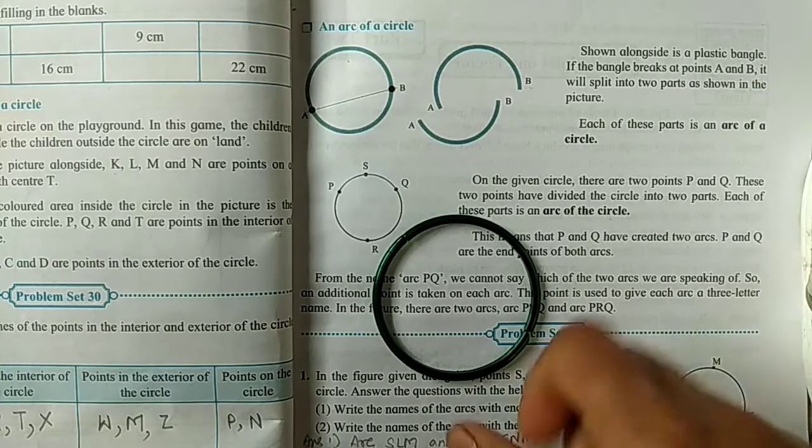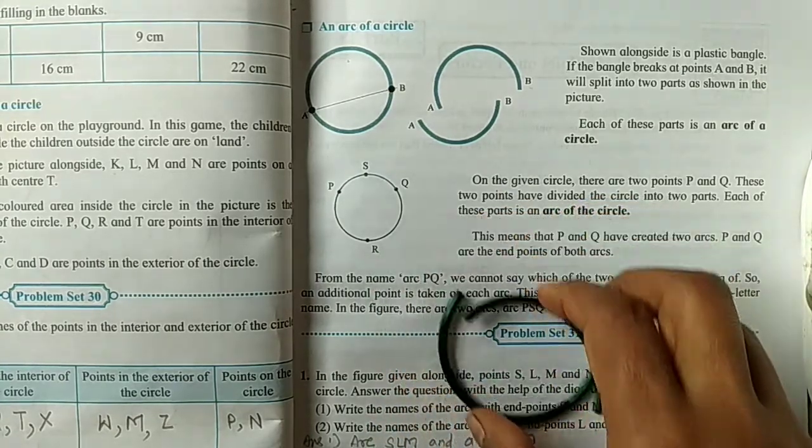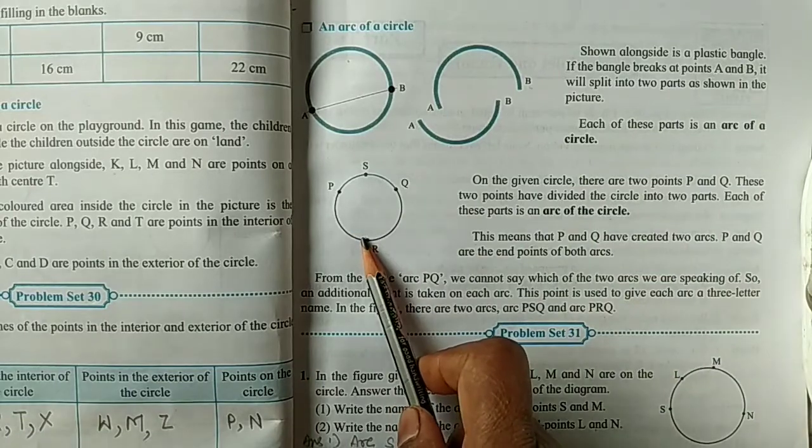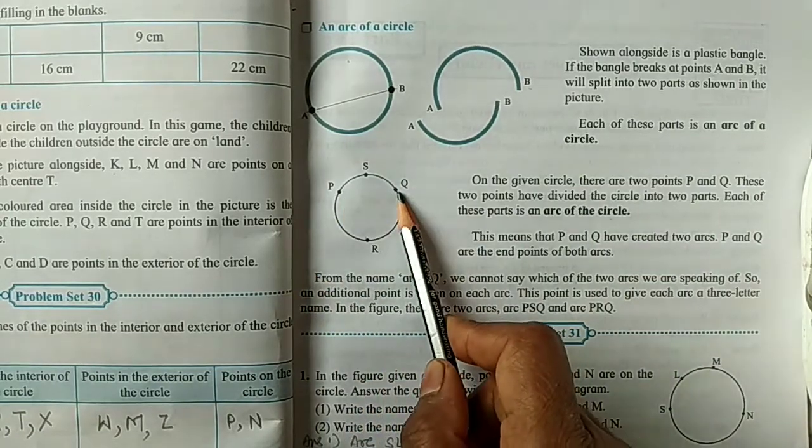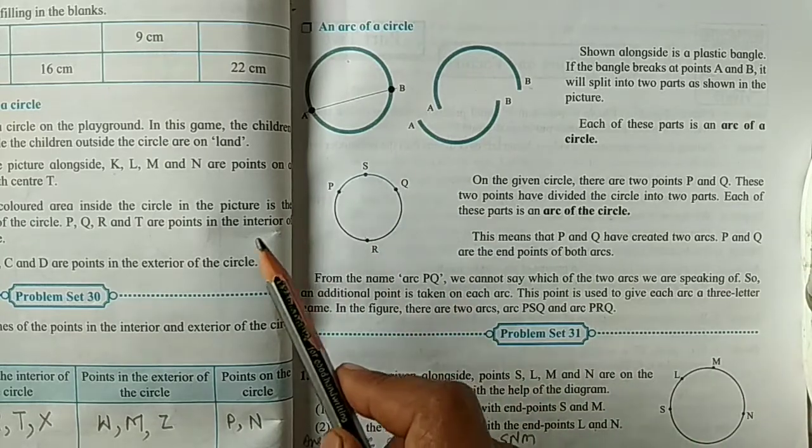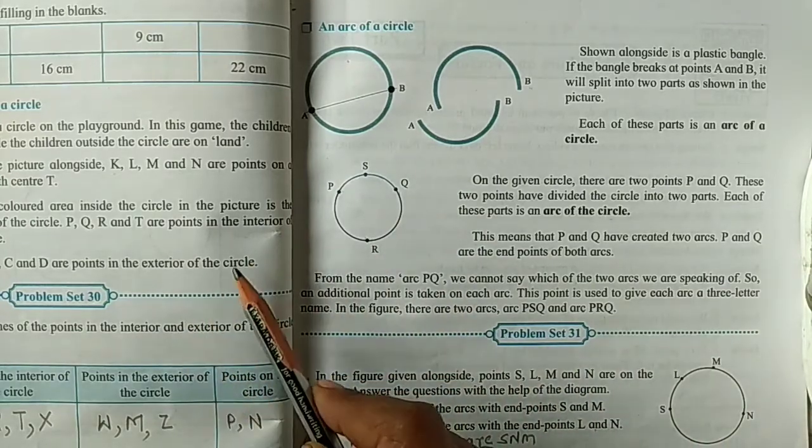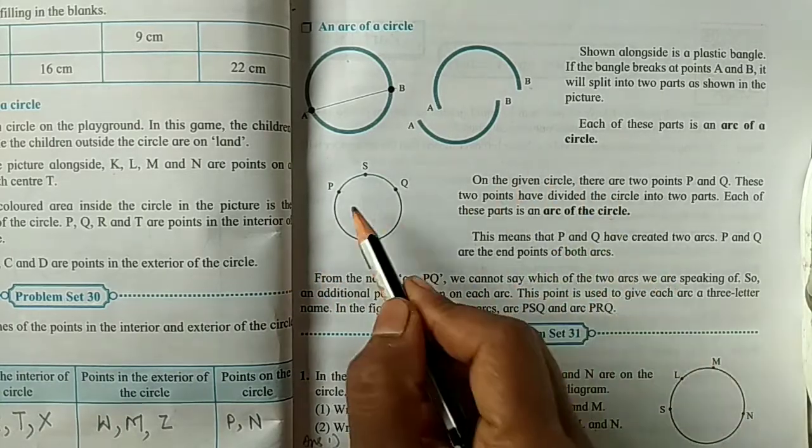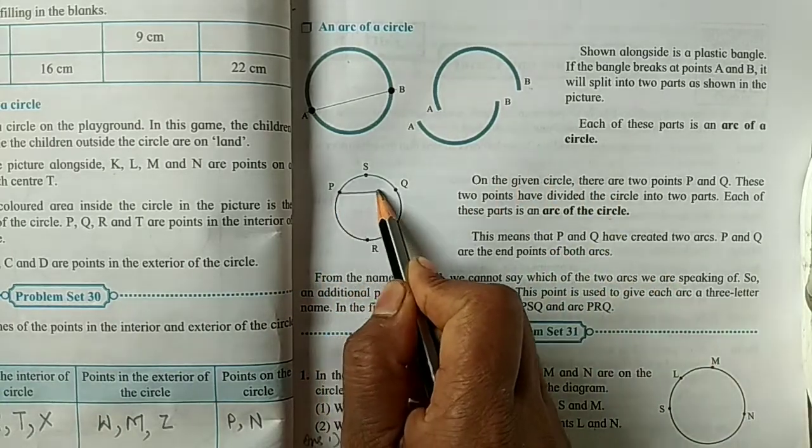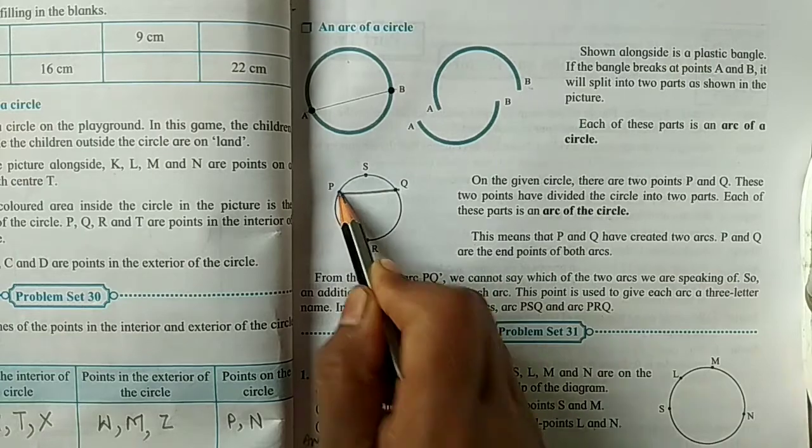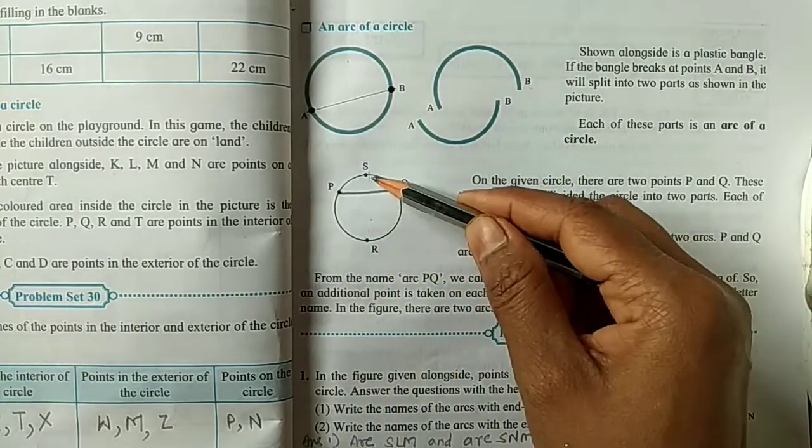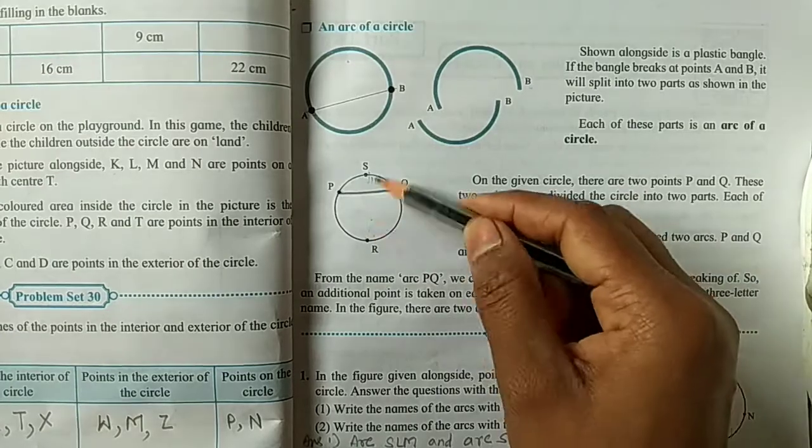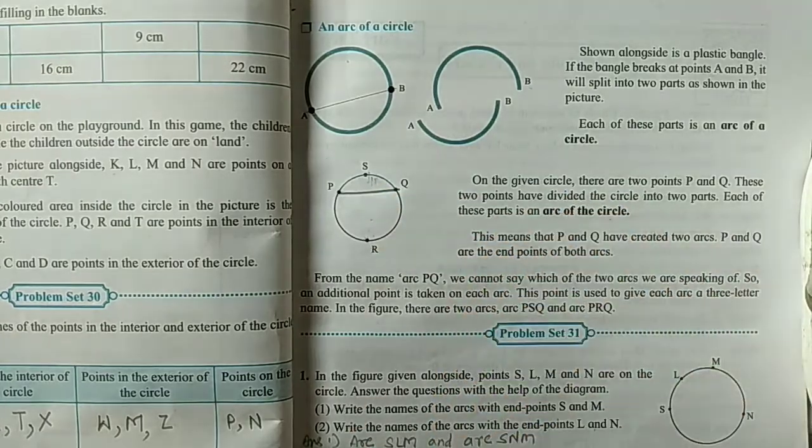Yes, let's say an example. On the given circle, there are two points P and Q. Okay, these two points have divided the circle into two parts. If I draw here one line, so this circle is divided into two parts. Okay, this circle is divided into two parts.